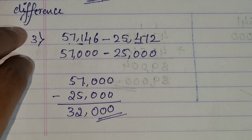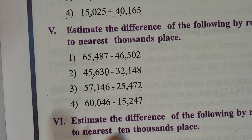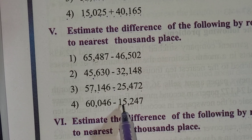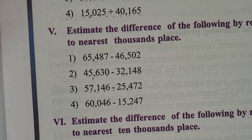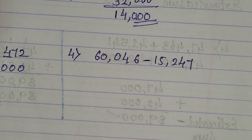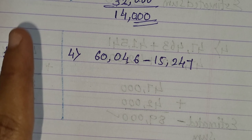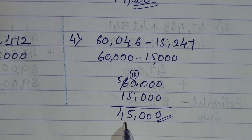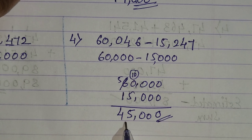Now let's take the 4th and last one: 60,046 minus 15,247. As we always do with the last example — pause the video, try to solve it yourself, then continue and check your answer with mine. The answer is 45,000, which is your estimated difference.